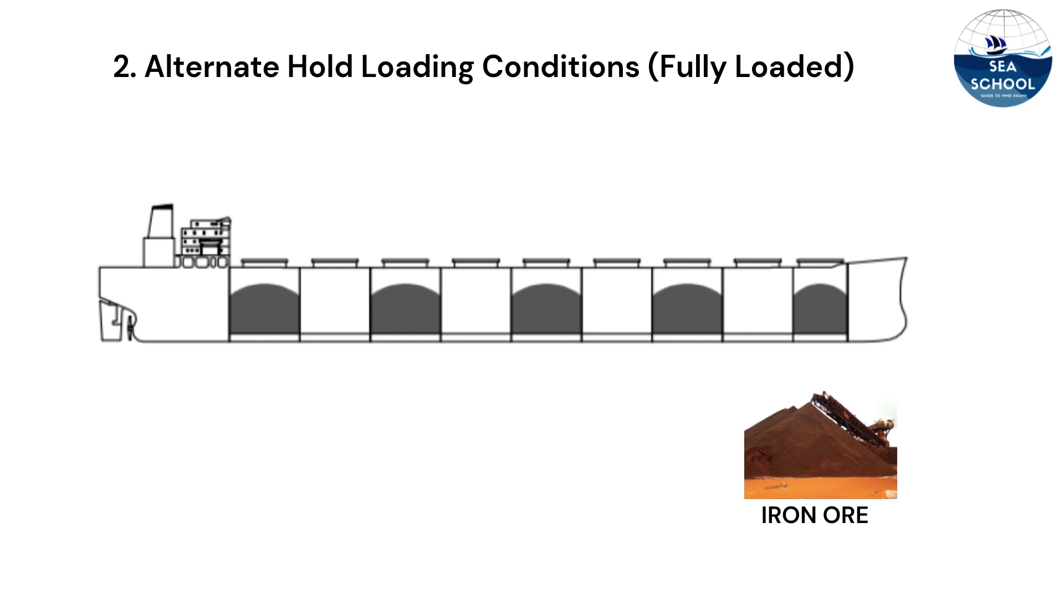When high-density cargo is stowed in alternate holds, the weight of cargo carried in each hold is approximately double that carried in a homogeneous load distribution. To support the loading of the heavy cargo in the holds, the local structure needs to be specially designed and reinforced.